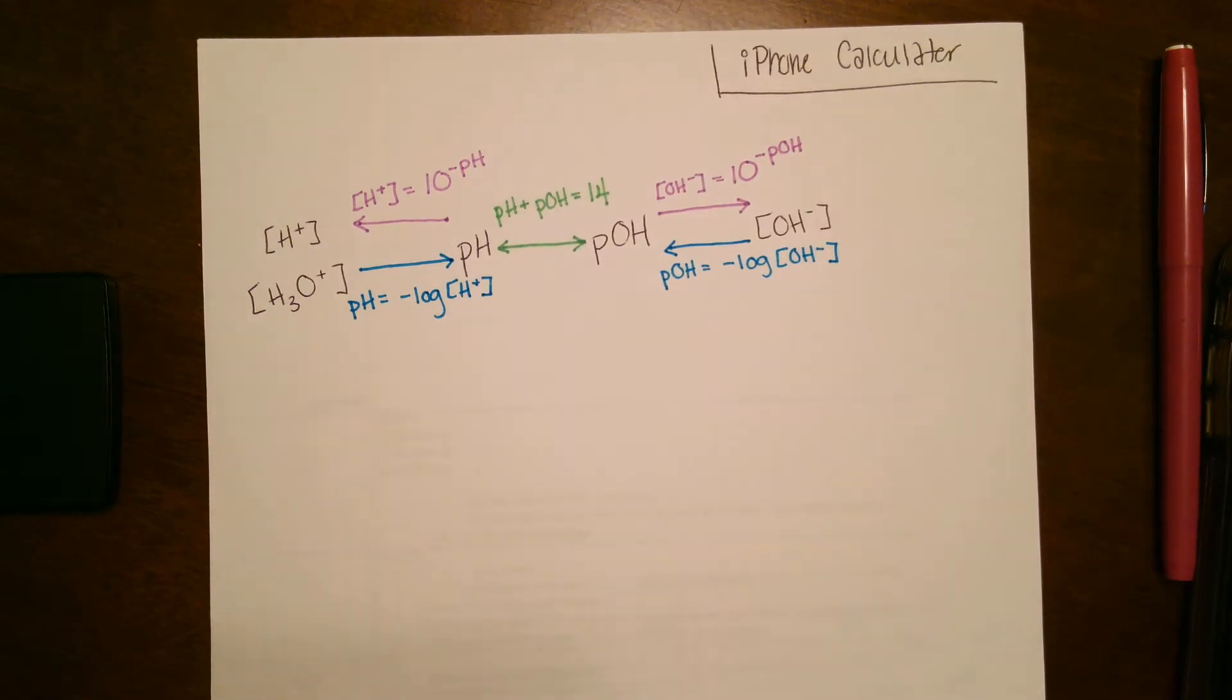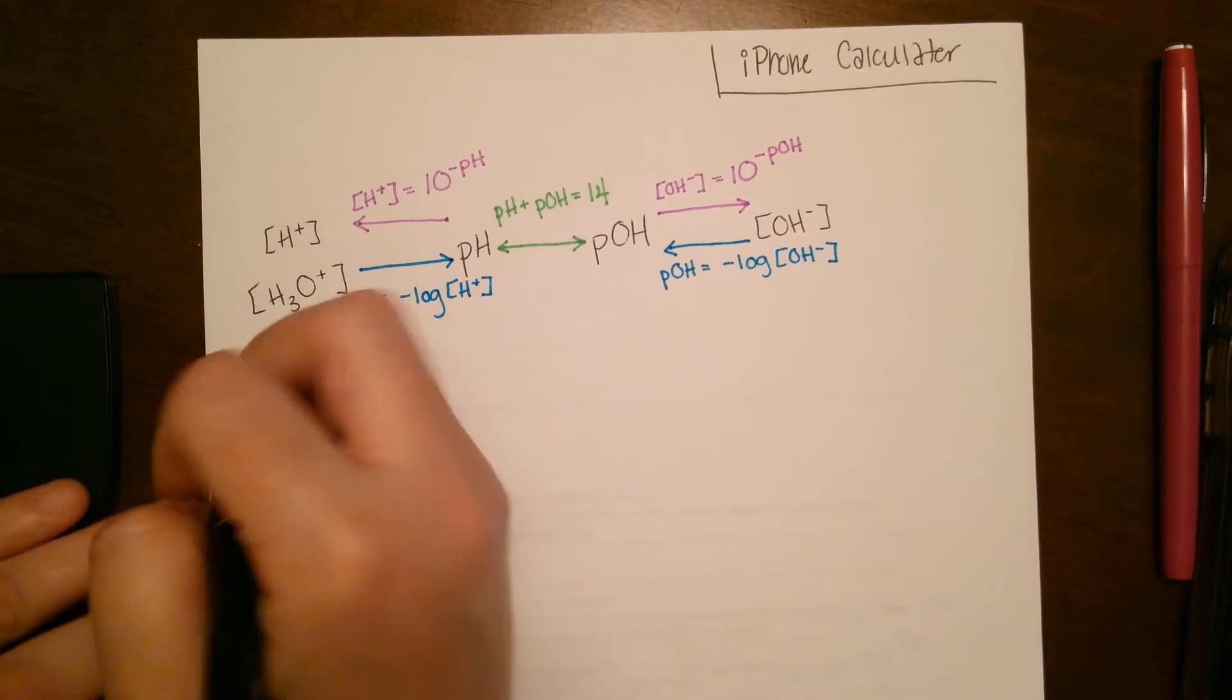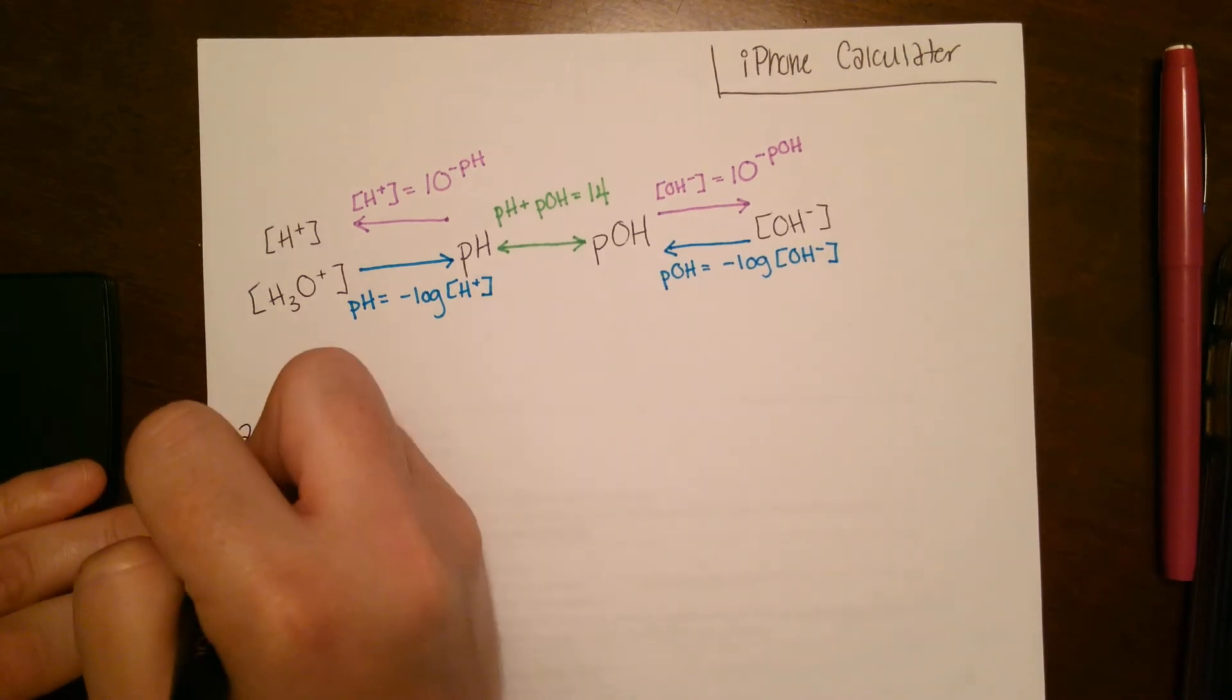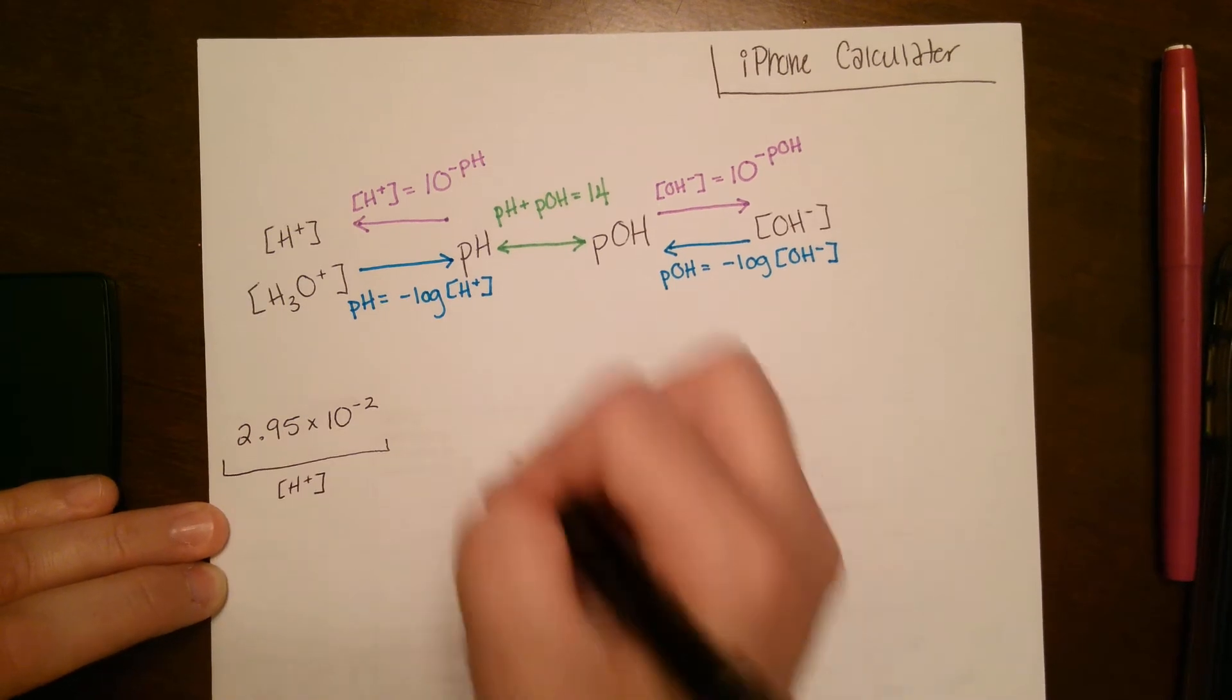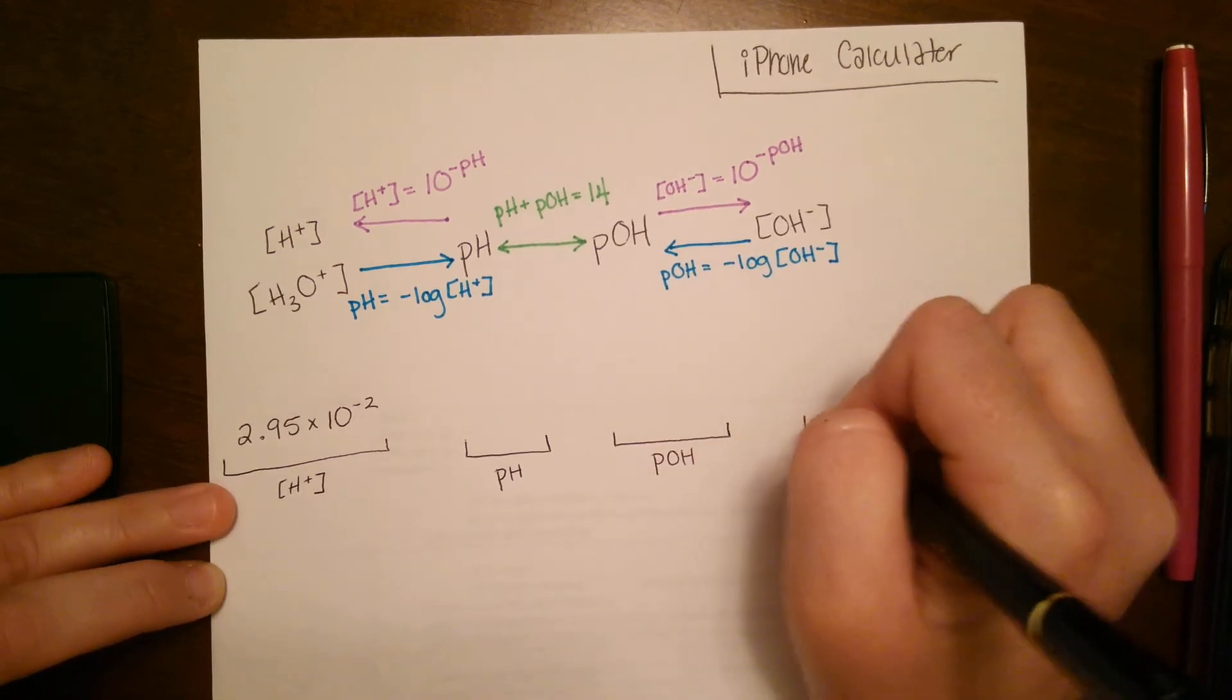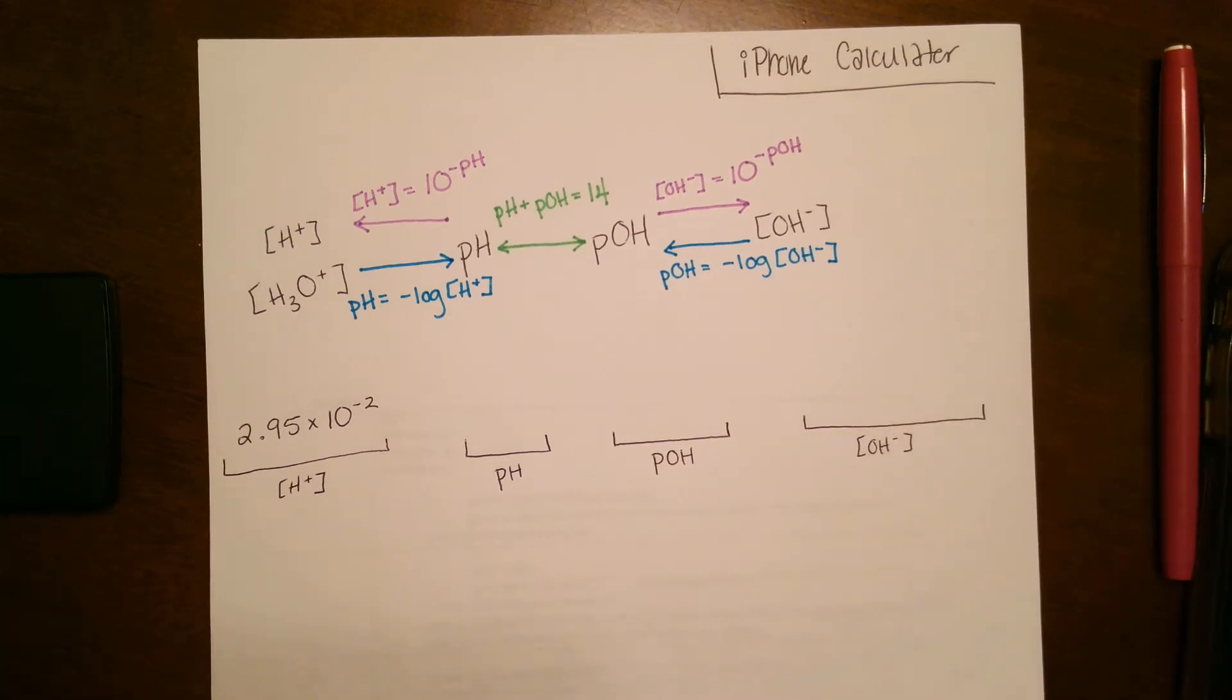So those are the equations that you're going to be using for these problems. So now, let's say that we have a problem, and it gives us the hydronium concentration. It says we have 2.95 times 10 to the negative 2 as the concentration of hydronium. And then it says it wants us to find the pH, the pOH, and the hydroxide concentration. So it wants us to find everything for this problem.